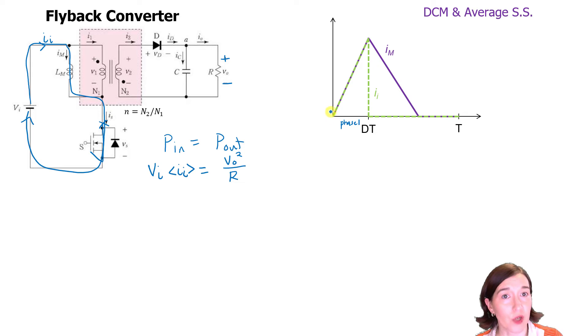Alright, so we have some charge here and we want to figure out how to get the average current. We have a triangle of charge here. And if we take this whole charge, and then divide it by the total period, we'll get the average current. So now we just need to figure out this triangle of current, and we can call this charge. We need to figure out the charge here.